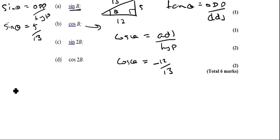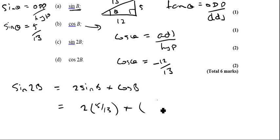For part C, I want to find out what sine 2θ is equal to. I use one of the double angle formulas. Sine 2θ equals 2 sine θ times cos θ. I've already worked out all these. So that's going to be 2 and sine θ is 5/13 times cos θ, which was minus 12/13, which will give me minus 120 over 169.